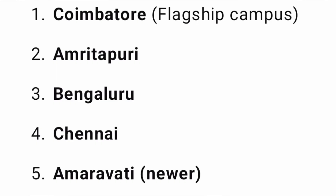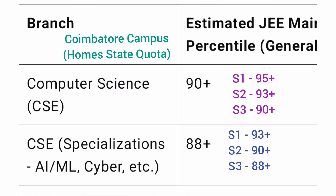Now let's discuss the cutoffs you can expect. For choice-filling purposes, you should prioritize campuses in this order: Coimbatore is the best or flagship campus and should always be kept at the top. Second-best is Amritapuri, third is Bangalore, fourth is Chennai, and fifth is Amravati, which is the newer campus.